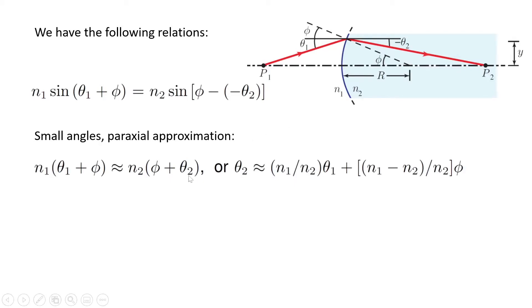If I simplify this equation, I can write theta 2 is n1 over n2 times theta 1 plus (n1 minus n2) over n2 times phi.